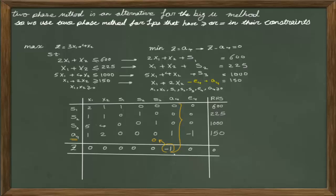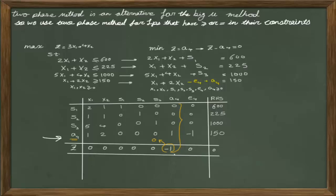To change the negative 1 to 0, we use an elementary row operation with row 4. All other values in the A4 column are 0, so multiplying any of those rows adds nothing. If I multiply row 4 by 1 and add it to the row of z, I generate the value of 0 under A4 in the z row. Let's perform this operation: r4 plus the row of z gives us the new row of z.